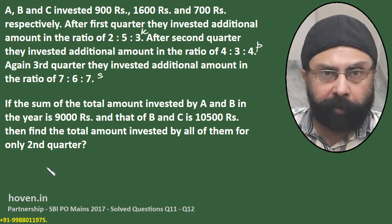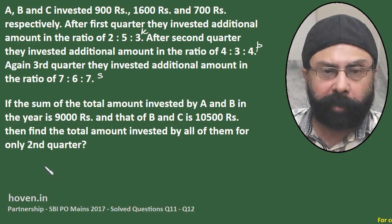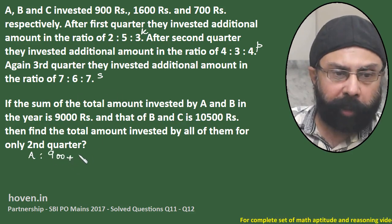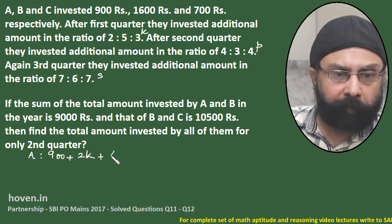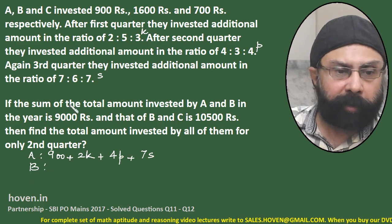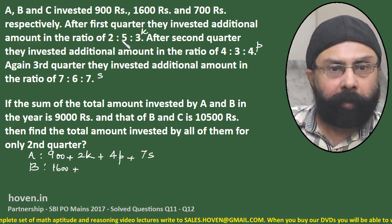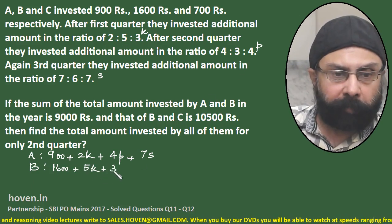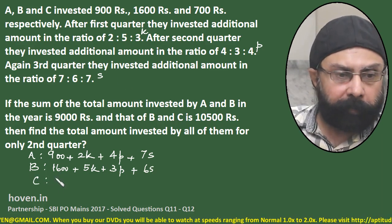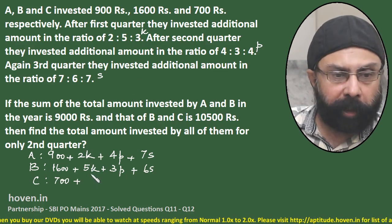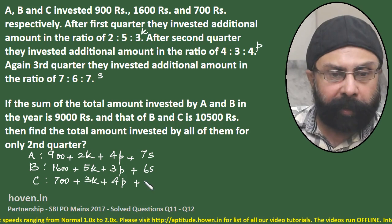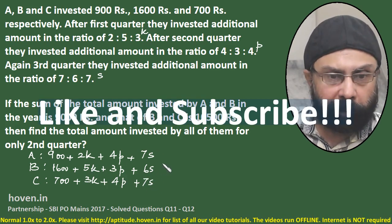The best way to do this is to write the individual investments first. The investment by A is: 900 + 2k + 4p + 7s. The investment by B is: 1600 + 5k + 3p + 6s. And the investment by C is: 700 + 3k + 4p + 7s. These are the investments by the three participants throughout the year.